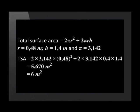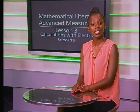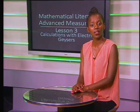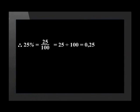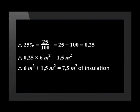This rounds up to 6 meters squared. The company making the geyser blanket recommends that contractors buy 25% more material than the actual size. We calculated the total surface area to be 6 meters squared. 25% can be written as 25/100, which equals 0.25. Multiplying 0.25 by 6 meters squared gives 1.5 meters squared extra. Adding 6 meters squared and 1.5 meters squared, we get a total of 7.5 meters squared.